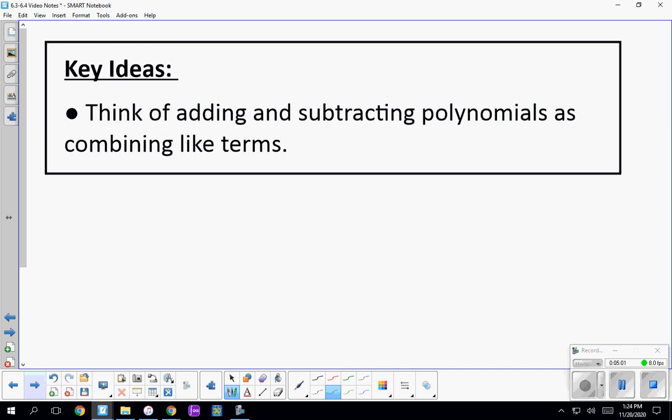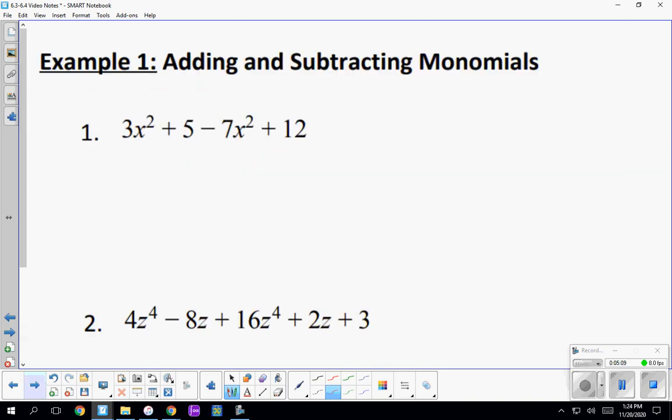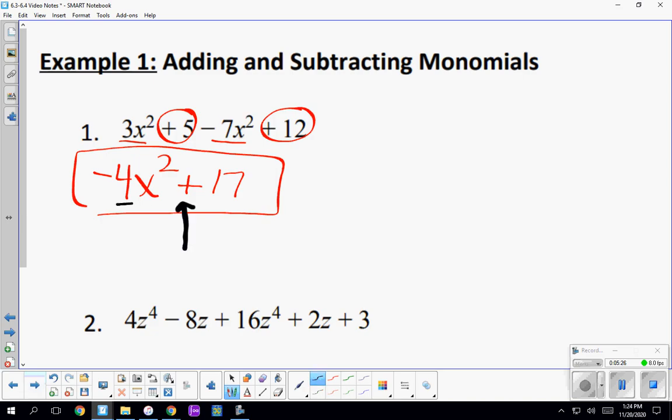So our key idea is we're just thinking of adding and subtracting just like combining like terms. If there is that minus in the middle, we do have to distribute it. But other than that, we're just combining like terms. So here I have a couple more examples. 3 minus 7 is going to be negative 4x squared, and then if I add together my constants I get plus 17. Again, this is an addition problem. Because this guy has an x squared and this guy doesn't, we cannot go any further.